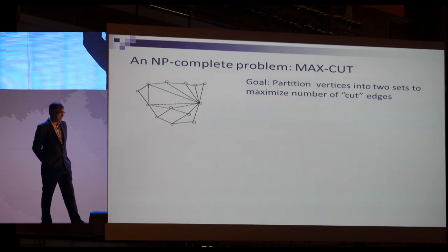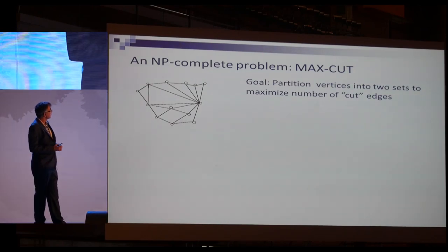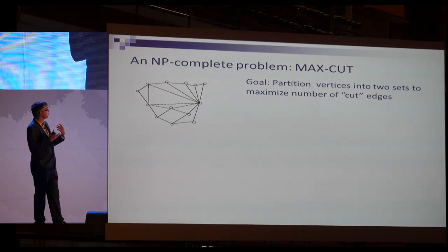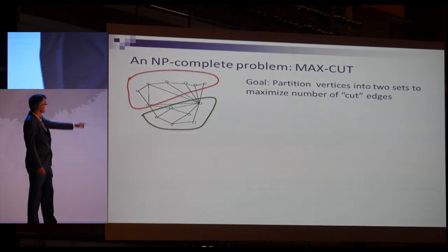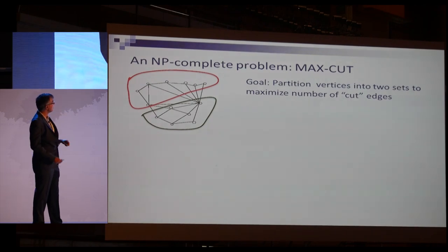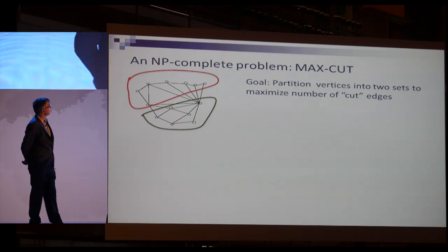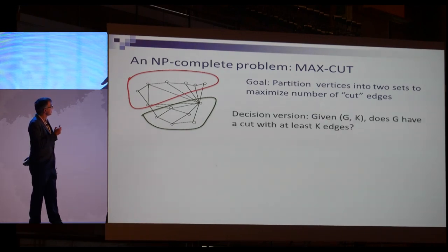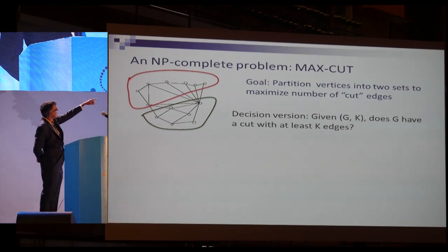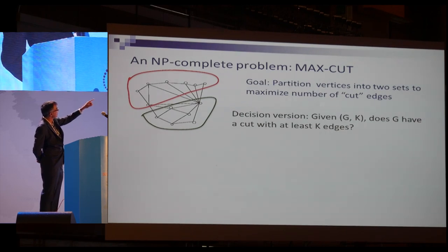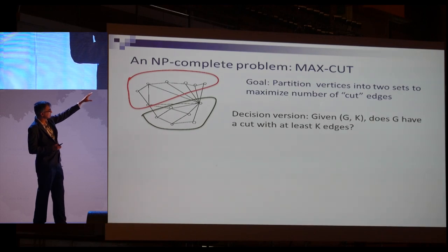Here's an NP-complete problem that will be a running example throughout this talk: Max Cut. Given a graph with vertices and edges, your goal is to partition the vertices into two sets so that you maximize the number of cut edges — the edges going from one side to the other. This problem was proven NP-complete in the 70s. Formally, the NP-complete problem is the decision version: given a graph G and a number K, does G have a cut with at least K edges?